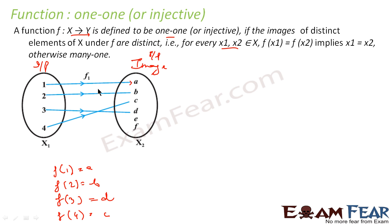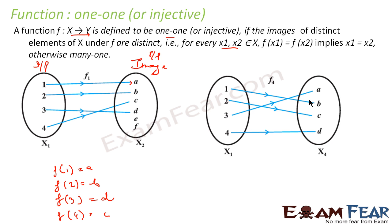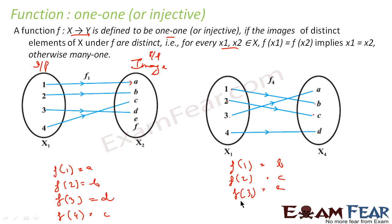Let me give you an example of a function that is one-one. In this function, you give 1 as input you get b as image, 2 gives c, 3 gives a, and 4 gives d. Every input has a distinct image — b, c, a, d are all distinct. Such a function is called a one-one function, that is injective.